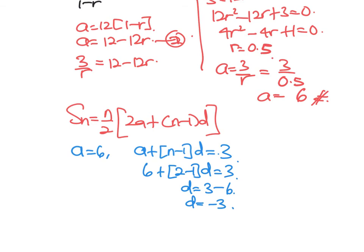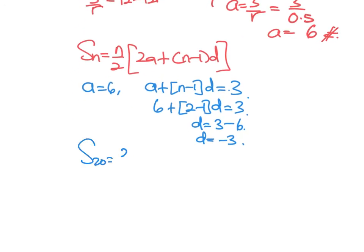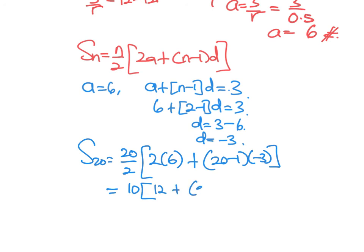Now we have a, we have d. Now we can find the answer. So S20 equals 20 over 2 bracket 2 times 6 plus n which is 20 minus 1, times by negative 3. And this is 10 times 12 plus 19 times negative 3. Let's use the calculator: 19 times negative 3, which is 57. So that's 10 times 12 minus 57. The answer is minus 450. So the sum for the first 20 terms in the arithmetic progression is minus 450.